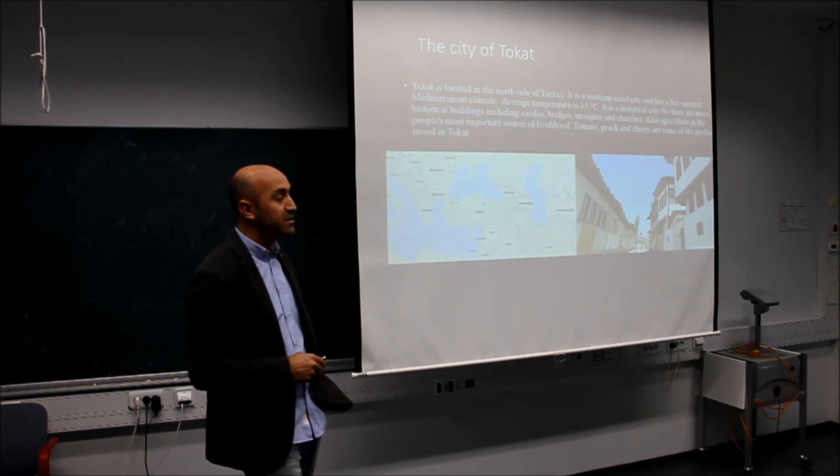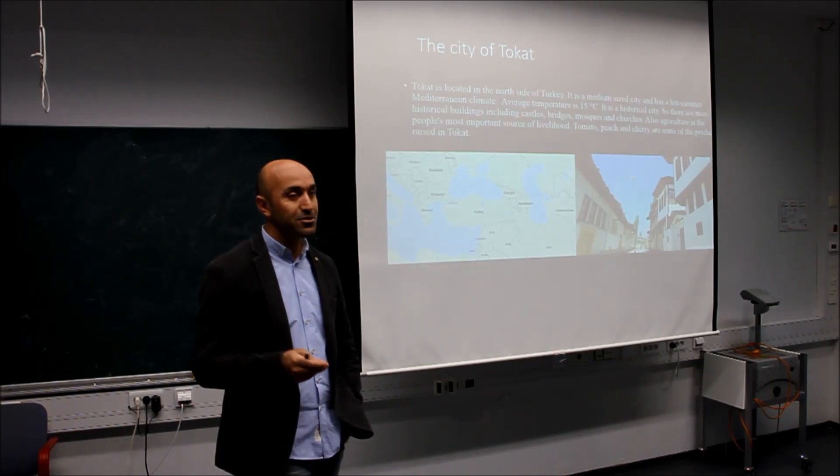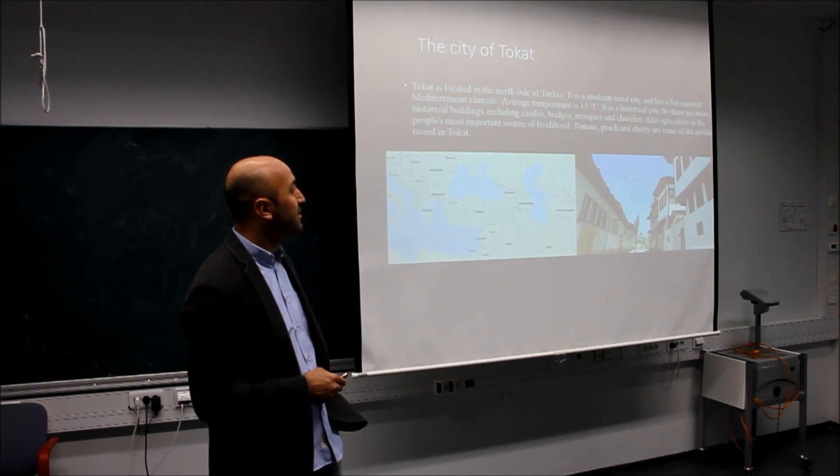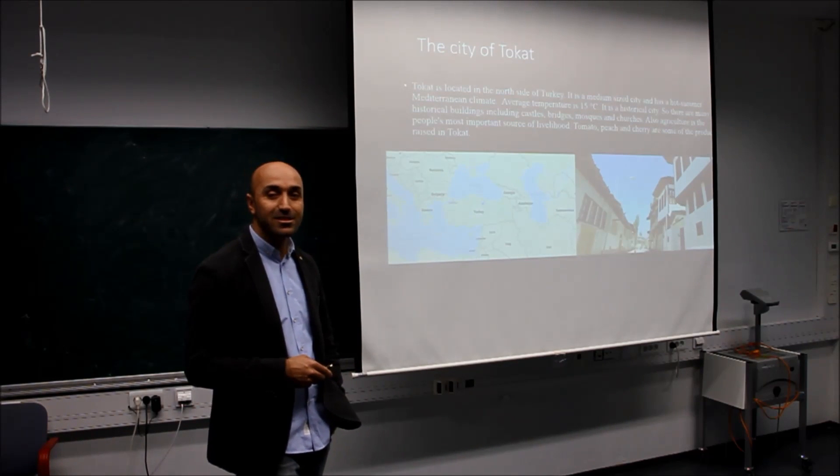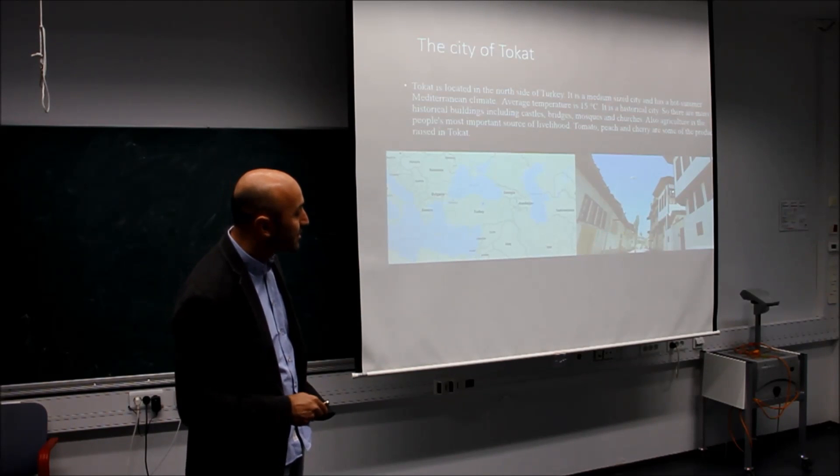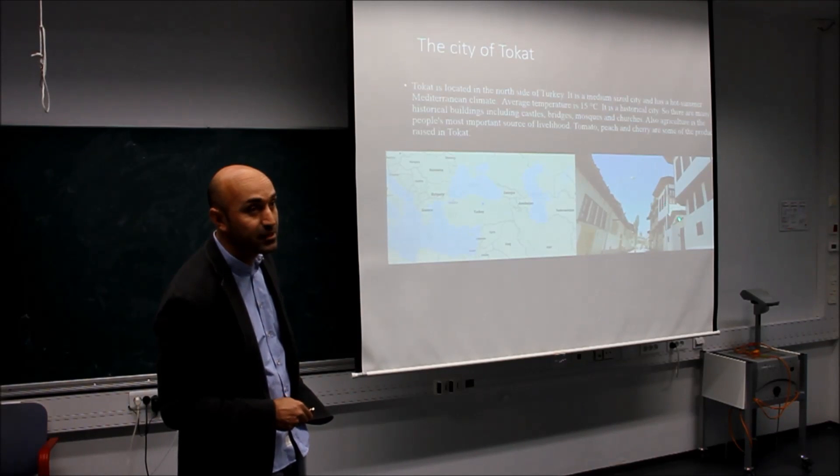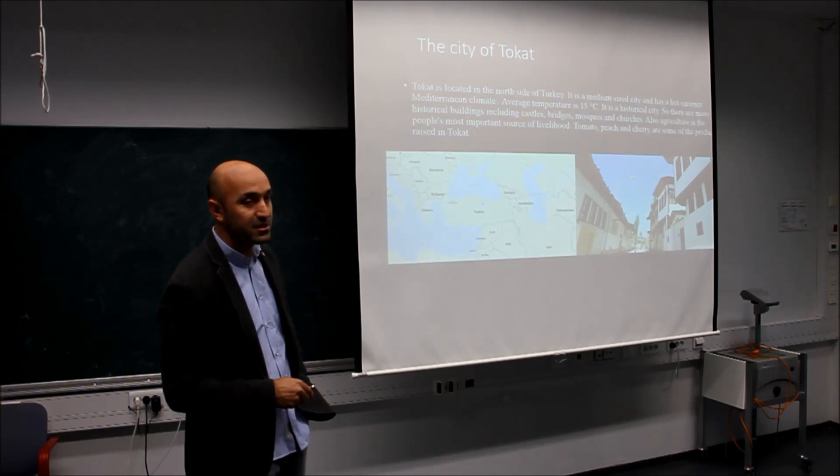Also agriculture is the people's most important source of life. Tomato, peach, cherry, apple and other kinds of fruits are some of the products harvested in Tokat. As you see, there are many historical buildings and Ottoman style buildings and houses there.